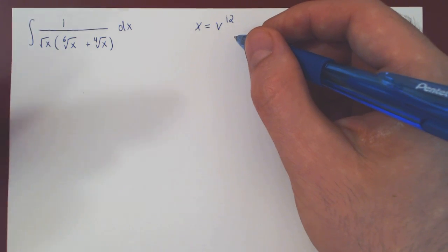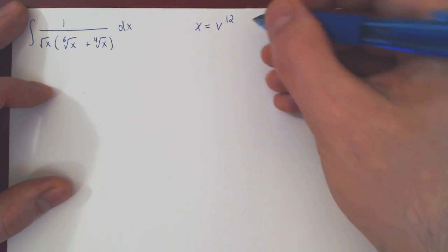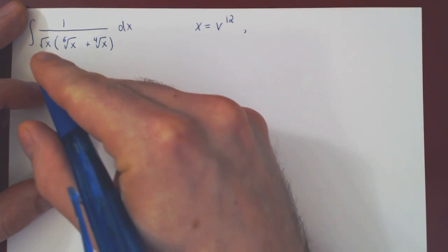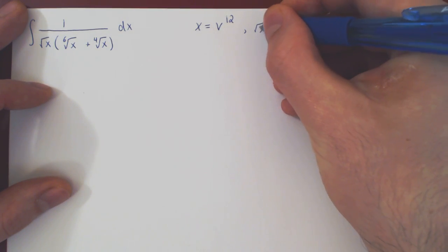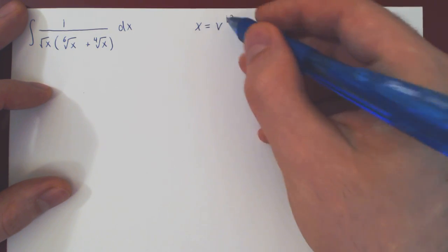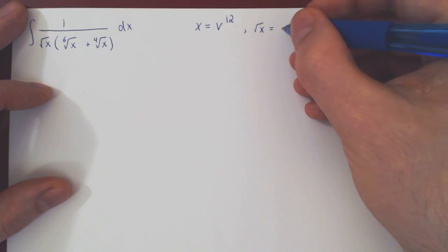Okay, and now of course we're good to go. So the square root of x is the power of 1 half, divide 12 by 2 you get v to the 6.